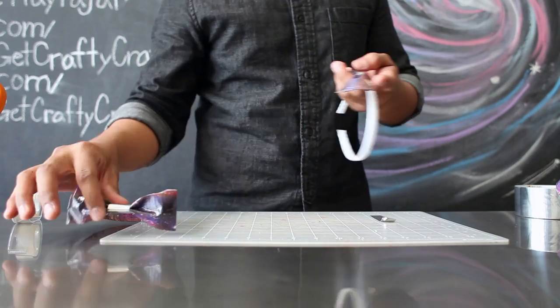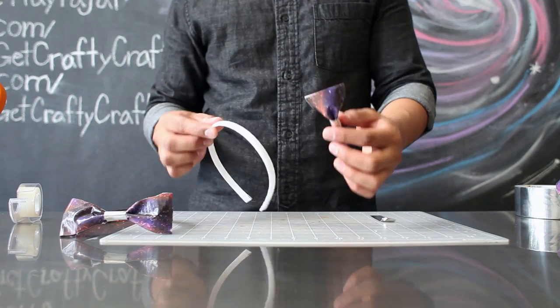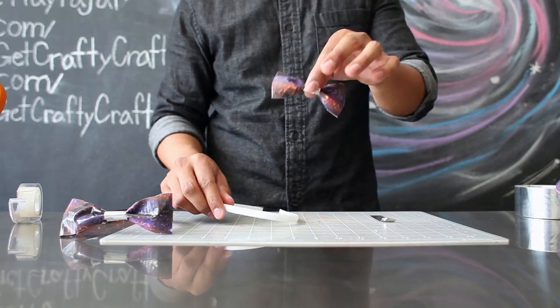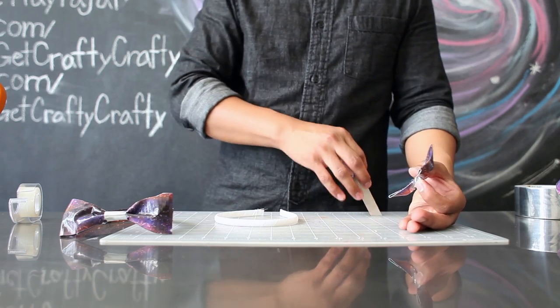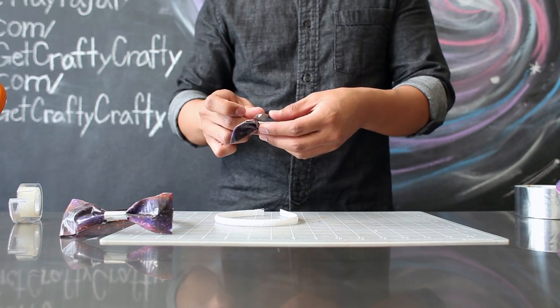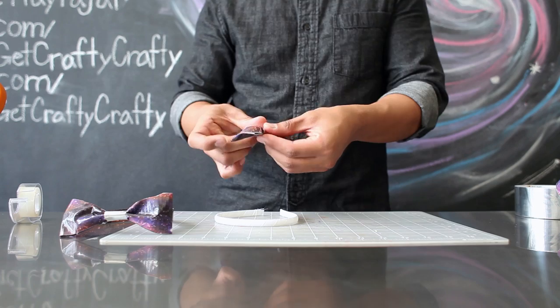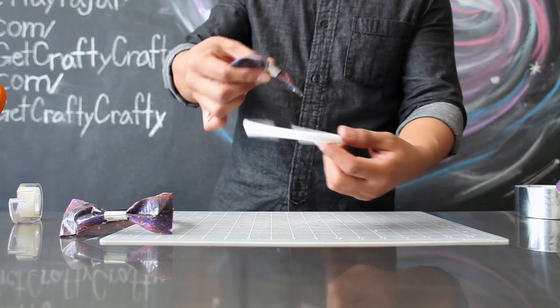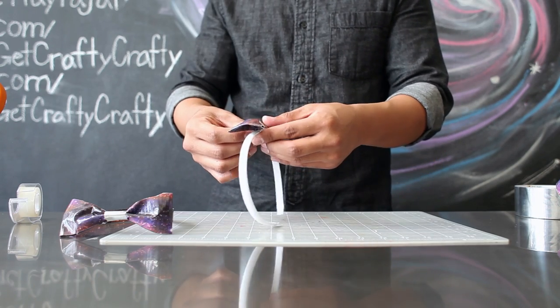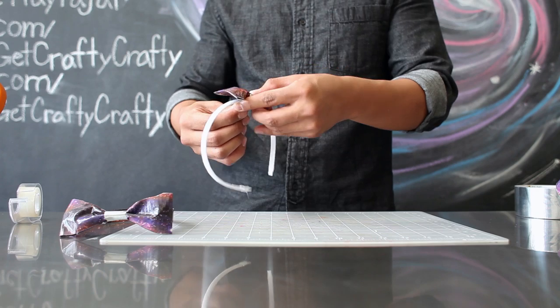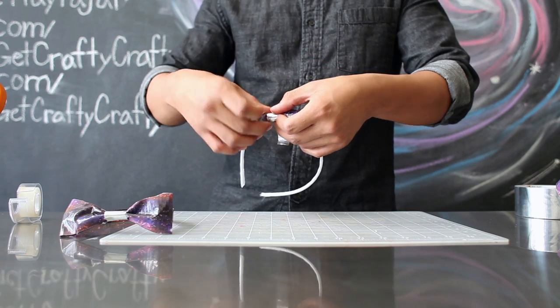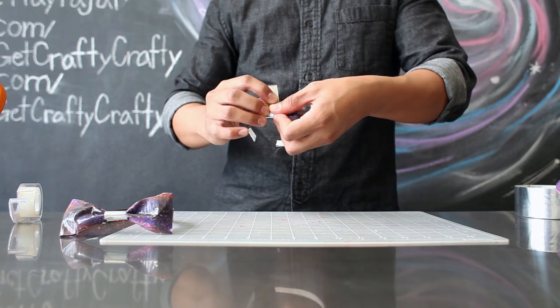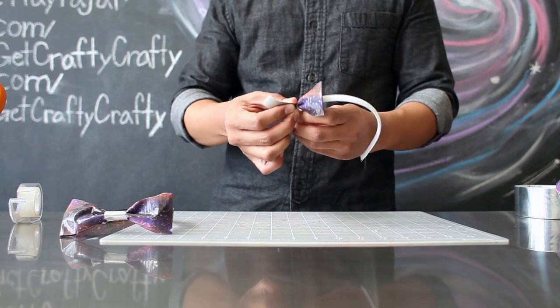To turn your bowtie into a headband, all you have to do is take your bow and instead of attaching it onto a collar, you just take a piece of your silver tape and attach it onto your headband. Wrap it around like you would on your collar and you've turned your bowtie bow into a headband bow.